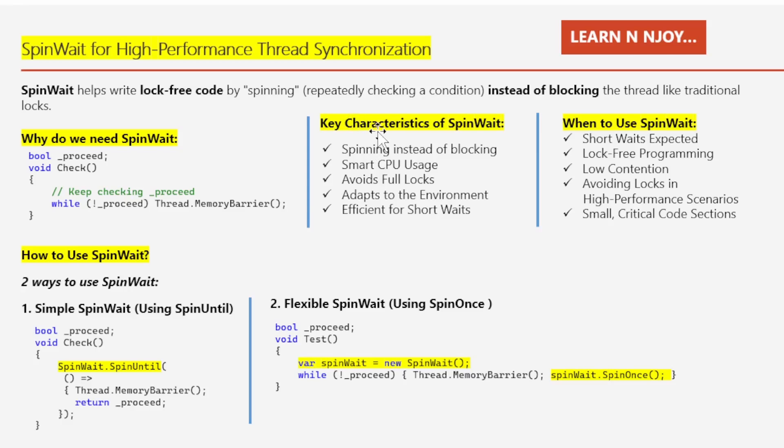Let's talk about the characteristics of SpinWait. Number one: spinning instead of blocking — SpinWait doesn't make the thread stop completely; it keeps checking if it can continue, avoiding the more time-consuming process of putting a thread to sleep and waking it up. Number two: smart CPU use — it's designed to avoid wasting too much CPU power. SpinWait starts by checking frequently, but if the condition takes too long, it backs off and waits longer between checks to save CPU resources.